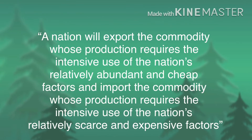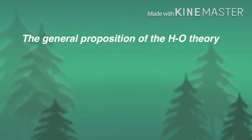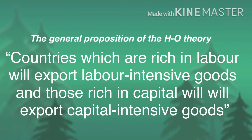In terms of factor endowment, this theory can be stated as follows: a nation will export the commodity whose production requires the intensive use of the nation's relatively abundant and cheap factor, and import the commodity whose production requires the intensive use of the nation's relatively scarce and expensive factors. The general proposition of the H-O theory is that countries rich in labor will export labor-intensive goods and those rich in capital will export capital-intensive goods.